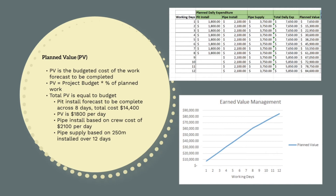Considering we plan to install both drainage pits within 8 days, our planned value is $1,800 per day. This is calculated by taking $14,400 — our total budget for drainage pit install — and dividing it by 8, the number of days it takes to complete the task. So at the end of week 1, our planned value will be $1,800 by 7 days equals $12,600. Our pipe install was planned at taking 12 days at a planned rate of $2,100 per day, so our planned value at the end of week 1 will be $2,100 per day multiplied by 7 days. Our planned value is impacted by both our project budget and when we plan to complete the works, so our project schedule.